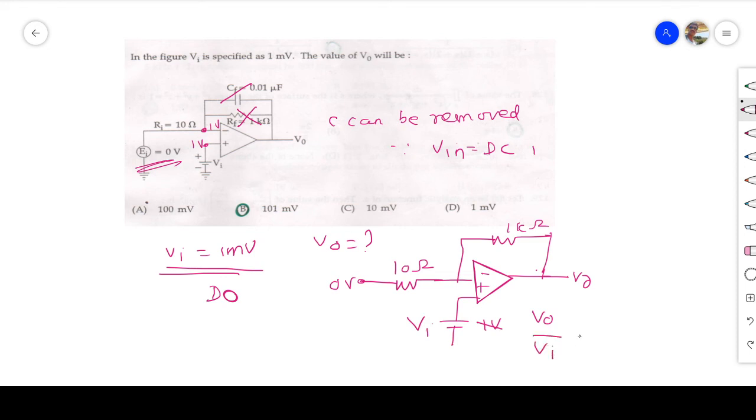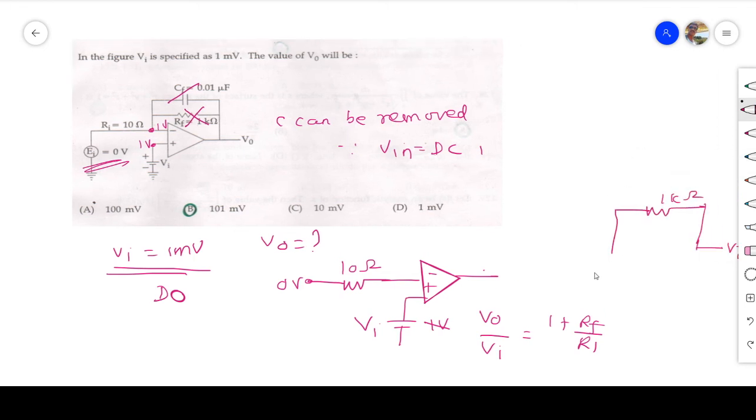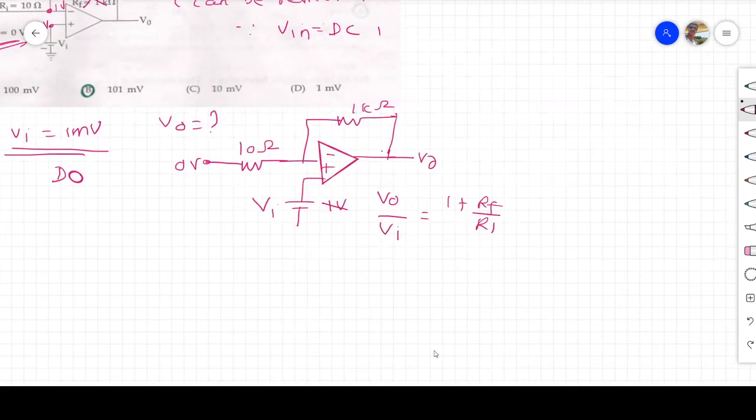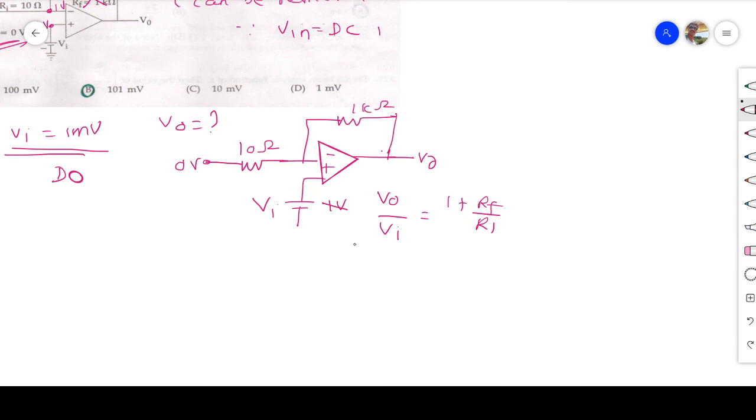For non-inverting amplifier, gain is V_O by V_I is equal to 1 plus R_f divided by R_1. So 1 plus R_f divided by R_1. R_f is 1k, R_1 is 10 ohm. V_O by V_I is equal to 1 plus R_f is 1k, 1000 ohm, R_1 is 10 ohm. That is 100. So V_O by V_I, gain is 101.